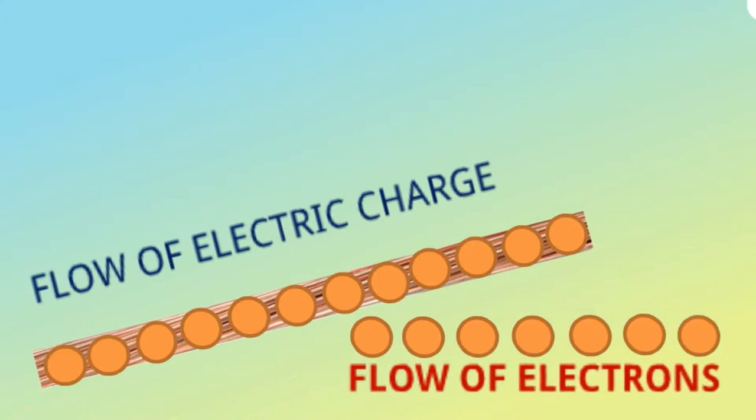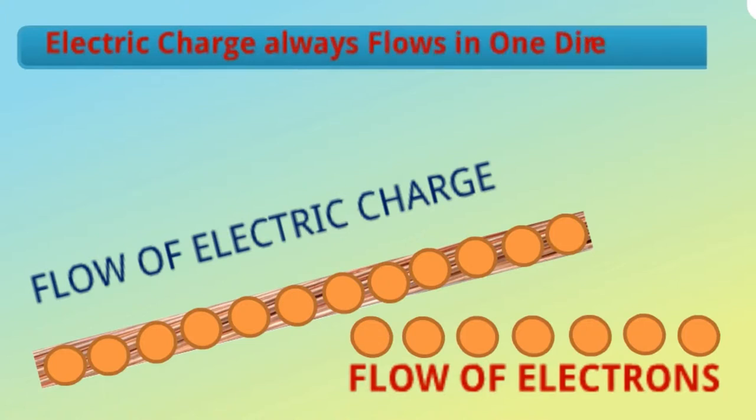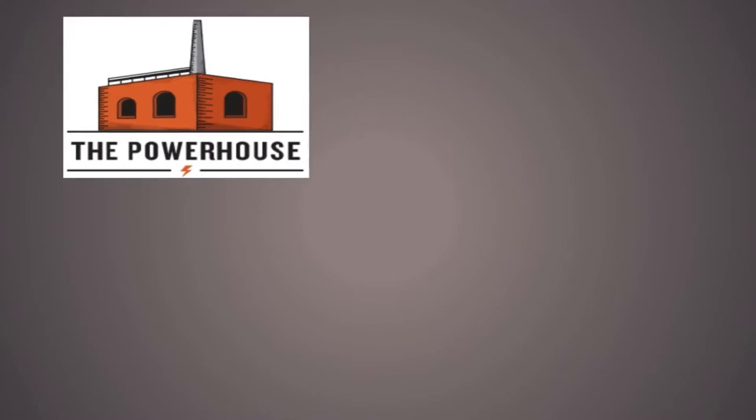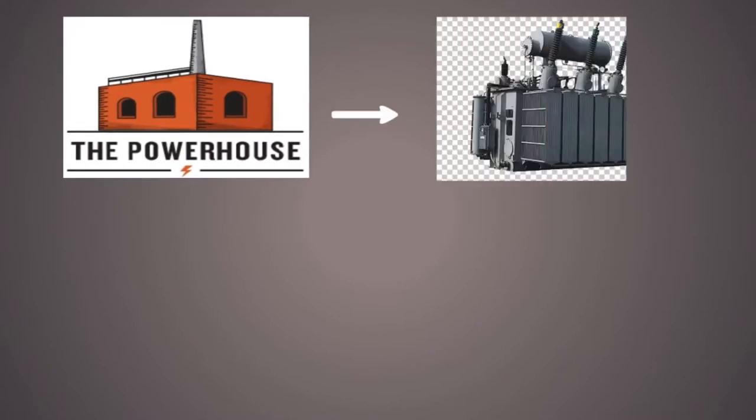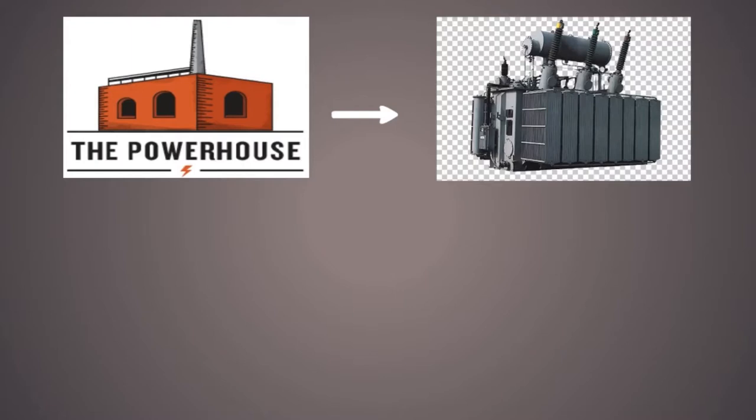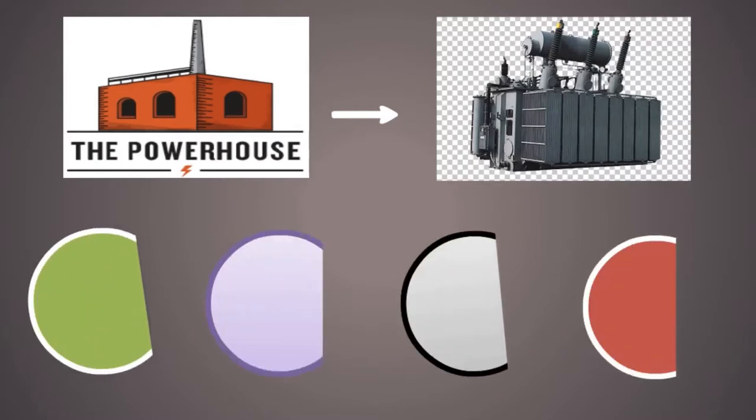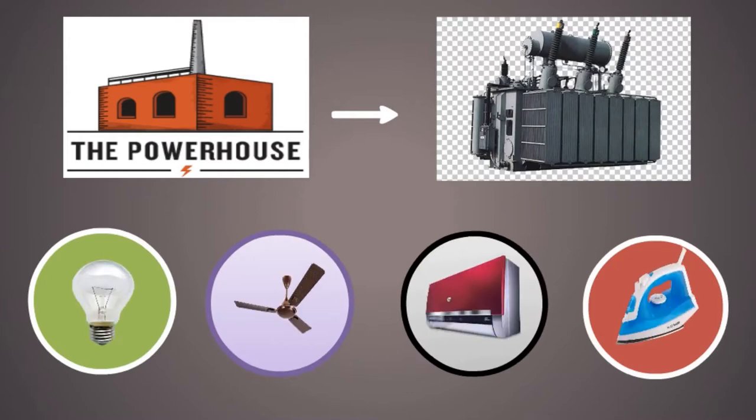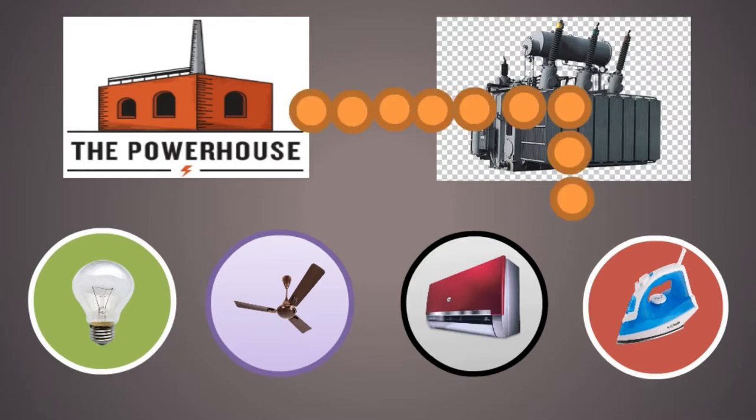We have seen that electric charge always flows in one direction. Why? Because electricity is produced in the power house, and from this power house, this electricity is supplied to transformers where it is stored. From the transformer, this electricity is supplied to our home appliances. So electricity always goes from power house to transformer to our appliances, so it will be in one direction.